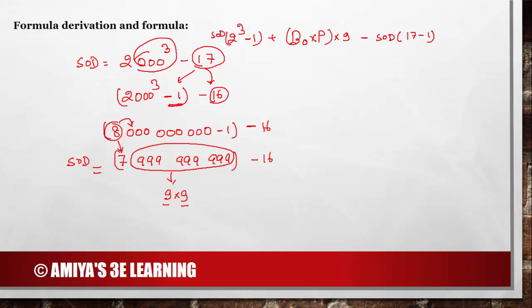And this is again the summation of digits. Instead of doing all this, we can say we have 2 cubed. 2 cubed is nothing but 8 — do not work on 8 but work on 7. So 3 nines are 9, 9 comes 9 times, and the extra minus: instead of working on 17, work on 16, that is minus 7. And this one is nothing but 81. Even after solving this we get nothing but 81. I hope this is clear.